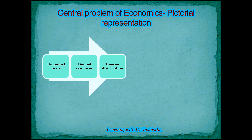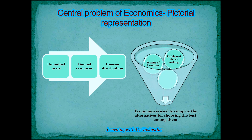A pictorial representation shows an arrow indicating unlimited users with limited resources. These limited resources are unevenly distributed, giving rise to the problem of scarcity and hence the problem of choice-making. These two central topics of economics together help us understand how to choose the best alternative that can increase our welfare.